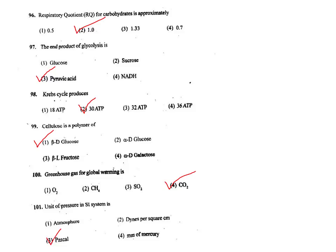Q97. The end product of glycolysis is — from one molecule of glucose, 2 molecules of pyruvate (pyruvic acid) are formed. The correct answer is option 3.